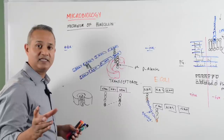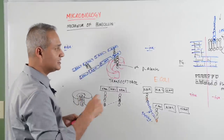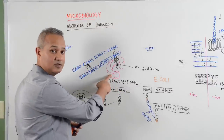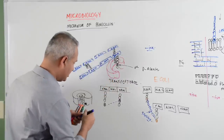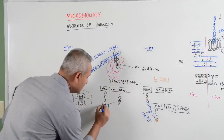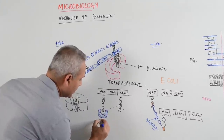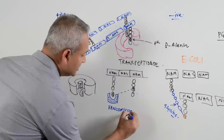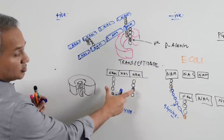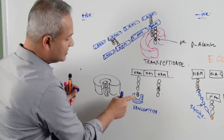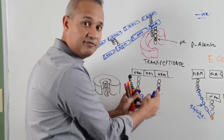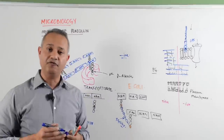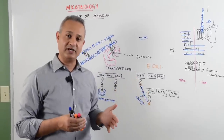Now, how does vancomycin work? Vancomycin does the same thing - it breaks the peptidoglycan layer - but instead of disrupting the transpeptidase, vancomycin goes and attaches directly to the D-alanine (the fourth amino acid). Once vancomycin attaches to the D-alanine, the transpeptidase has to come there to connect the chains, but because that site is already occupied, the transpeptidase cannot do its function. Cross-linking does not occur, the peptidoglycan layer stays weak, and that is the mechanism of action of vancomycin.